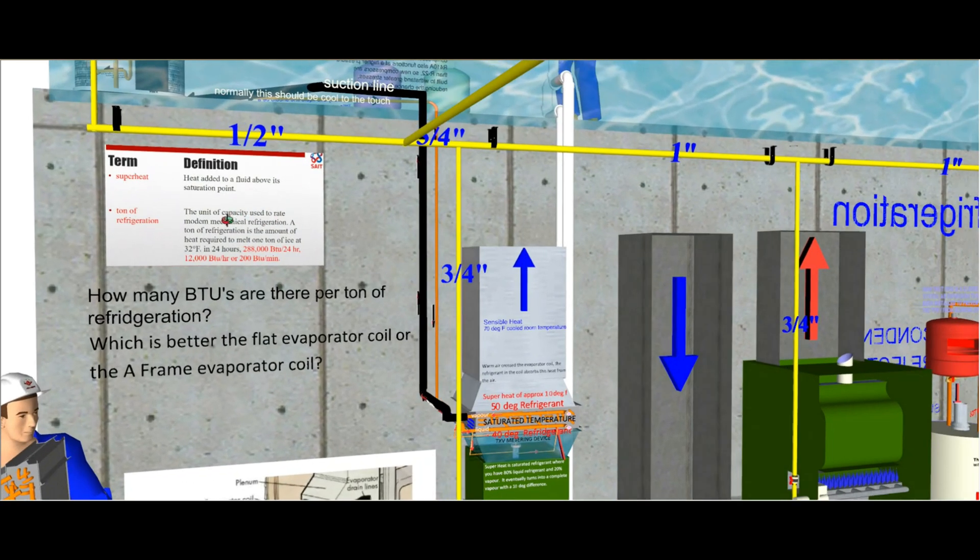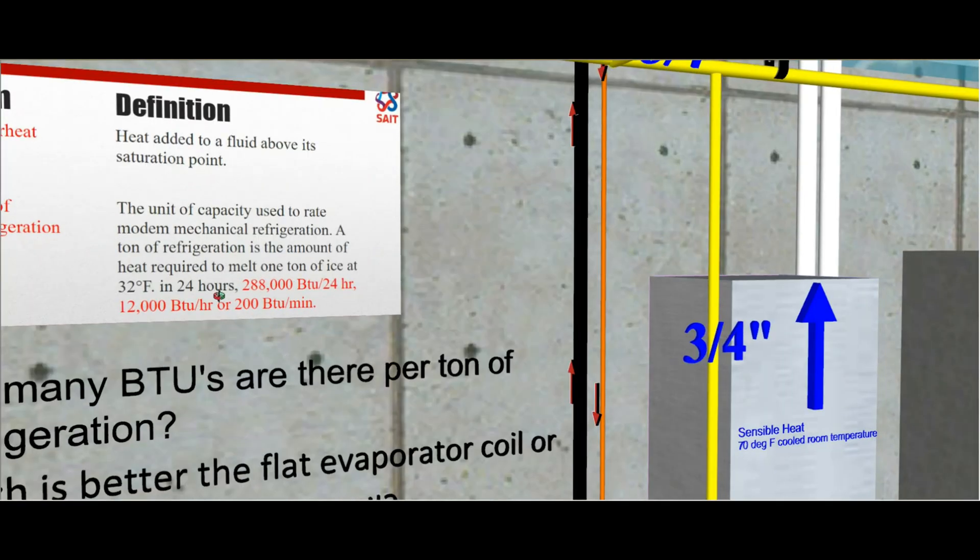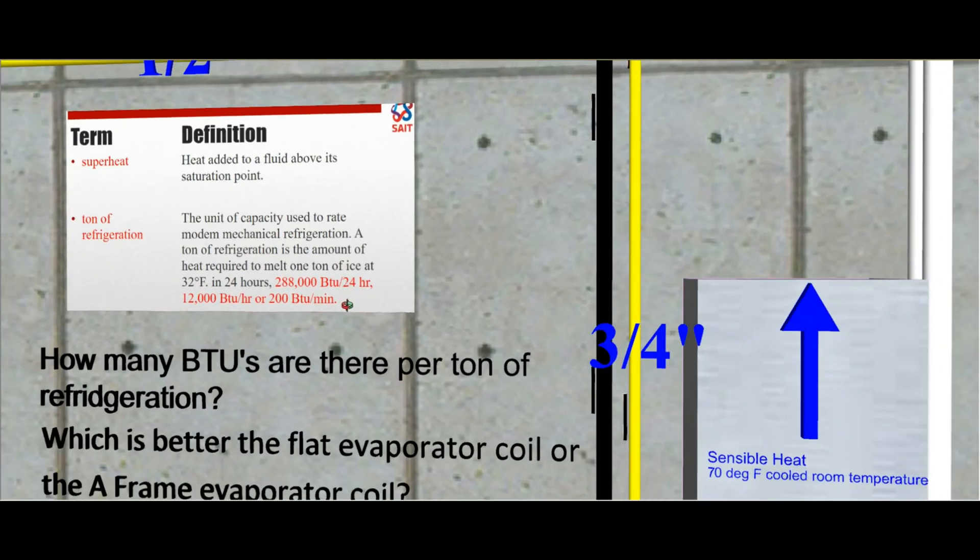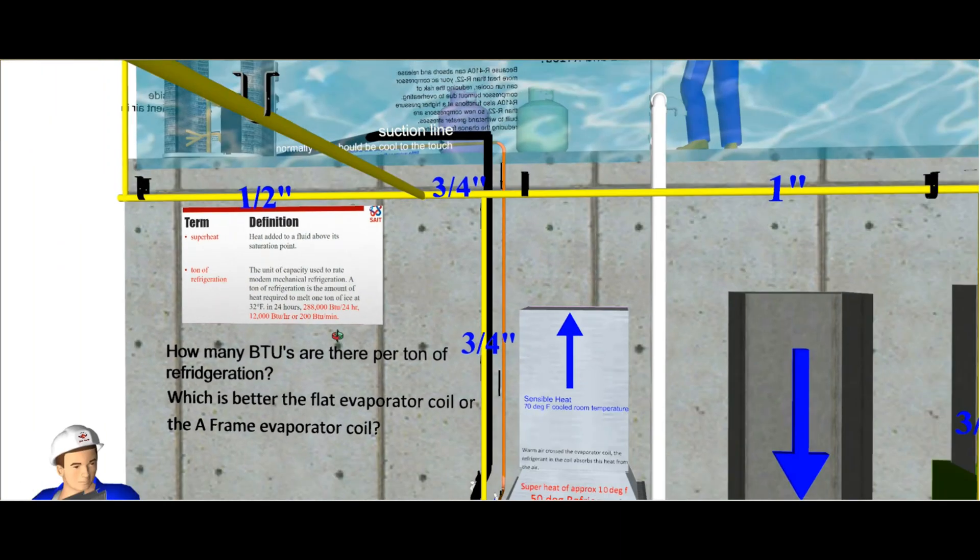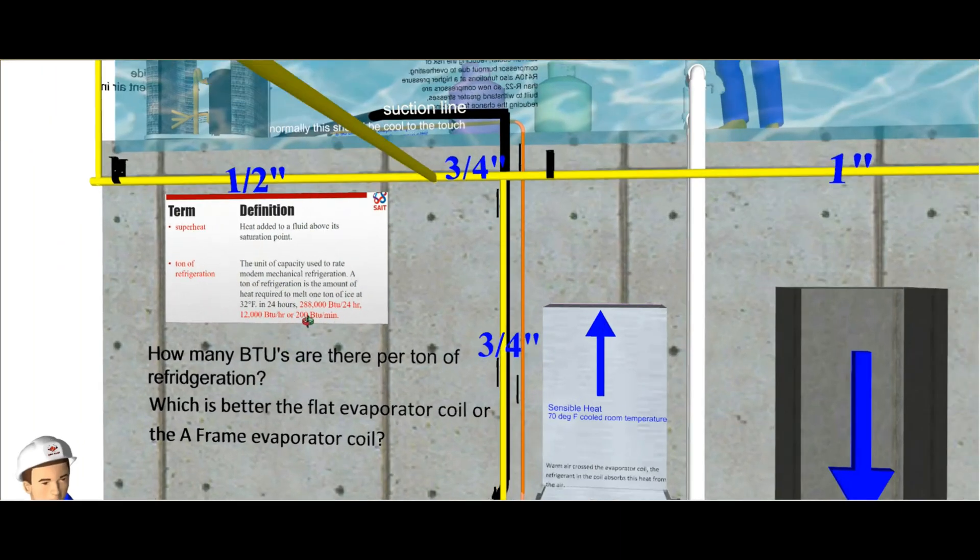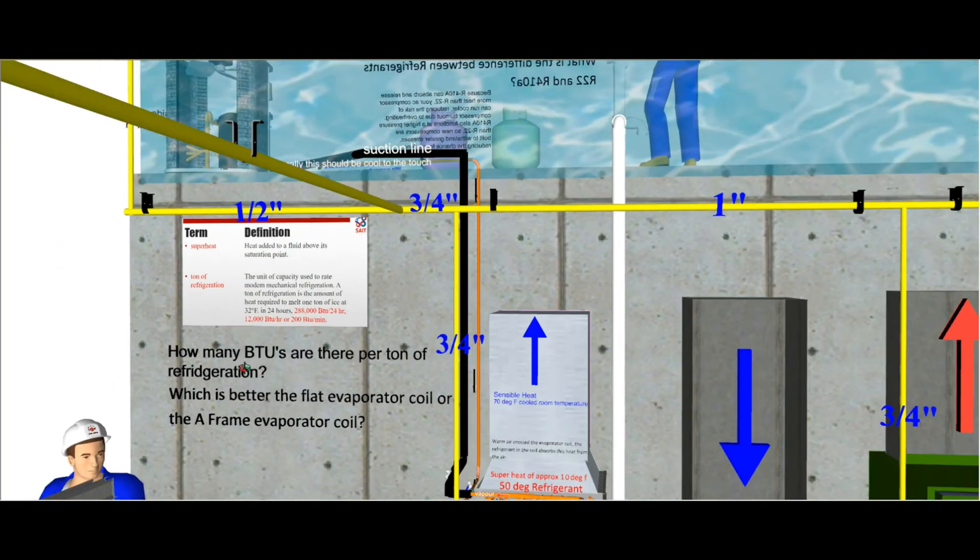A few things our students should know is that one ton of refrigerant is equal to 12,000 BTUs of energy, right? And another question I asked is...